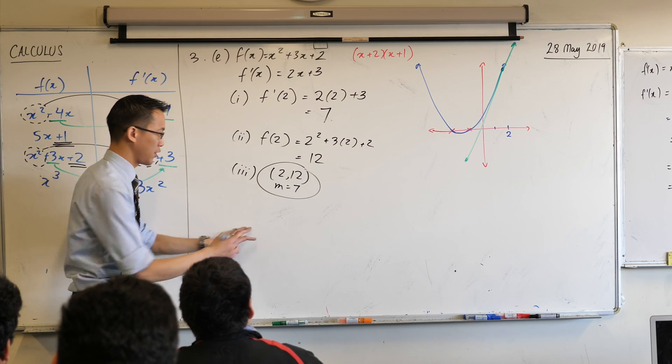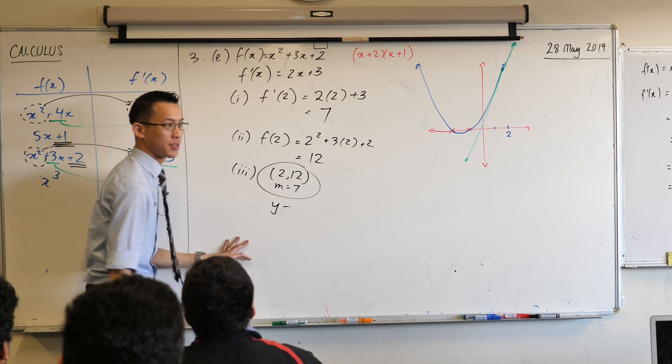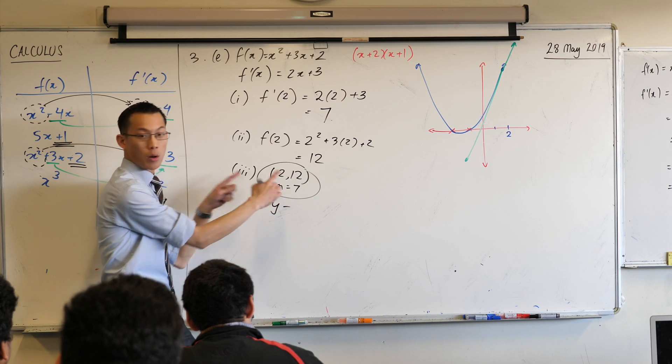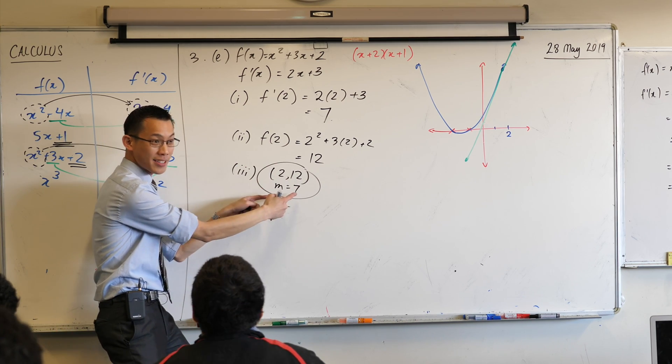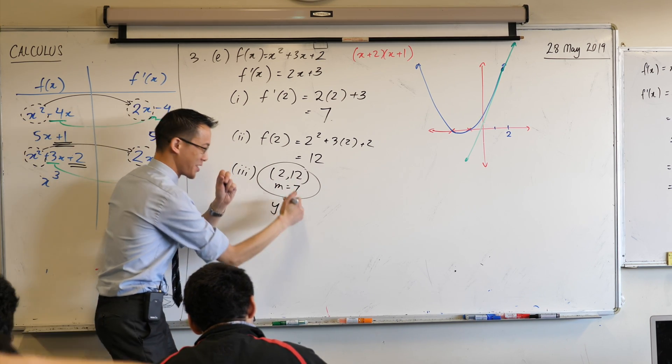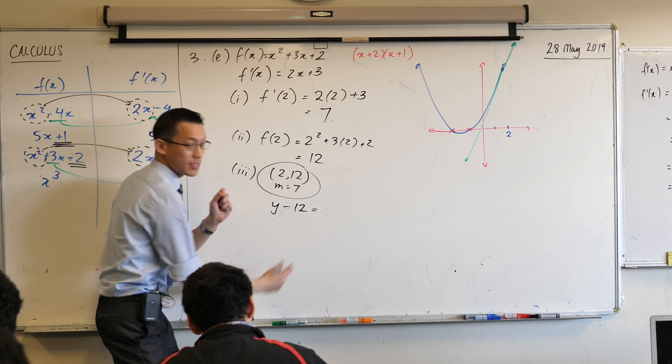I'll give you a clue. It starts with y minus... Y minus y1. Y minus y1. What's y1? 0.2. In this case, it's 12. It's a y-coordinate. Y minus y1. There it is. And then equals what?